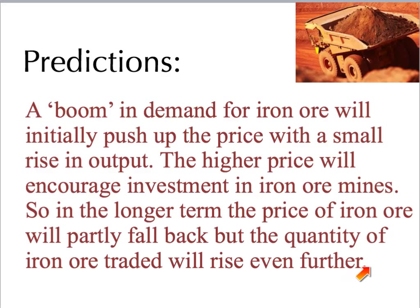As new coal and iron ore started to be produced around the world — in Australia, Brazil, Russia, Canada, and so on — the price started coming back down again, but the quantity of iron ore and coal being traded from Australia and around the world was still much higher. By about 2014, the price of iron ore and coal had come significantly back, but Australia was selling a lot more iron ore and coal than in 2004. So the short run here was about five years, but the long run was about a decade. Our economic predictions were spot on.